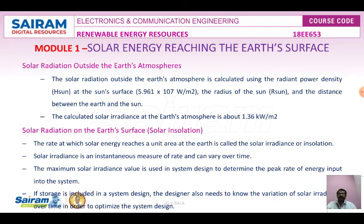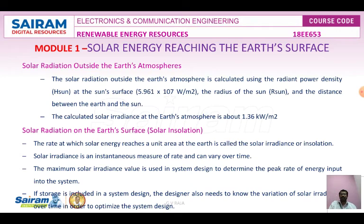The solar radiation reaching the Earth's surface may be defined in various terms: beam radiation (direct solar radiation), diffuse radiation, and global radiation. Air mass is also a factor to be considered.